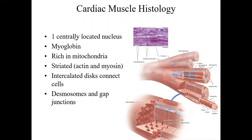Cardiac muscle cells generally have one centrally located nucleus — that's different from skeletal muscle fibers, which are multinucleate. They're also very rich in myoglobin, a special type of hemoglobin that helps bind oxygen even better, providing a lot of oxygen supply to the cardiac muscle cells. They're also very rich in mitochondria, which means they generate a lot of ATP.